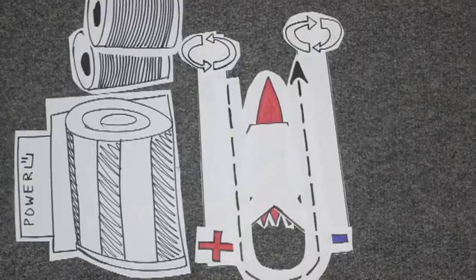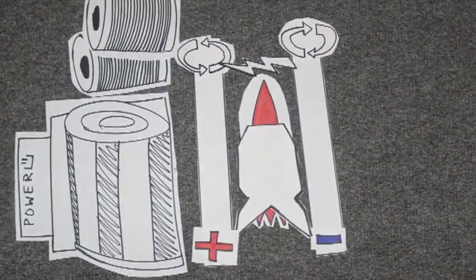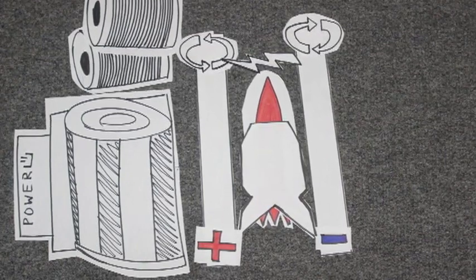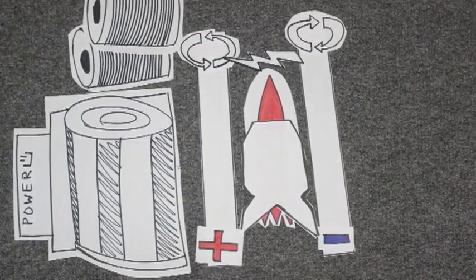This creates a magnetic field around the rails and the armature. The magnetic field on the positive rail moves counter-clockwise, and on the negative rail, it moves clockwise.